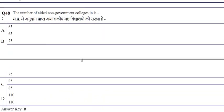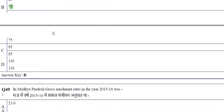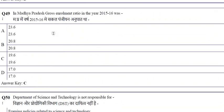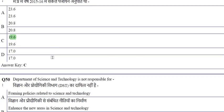The number of aided non-government colleges is 75. The gross enrollment ratio in Madhya Pradesh in the year 2015-16 was 19.6.